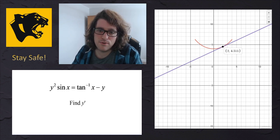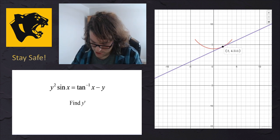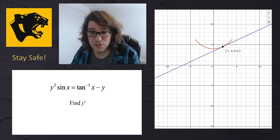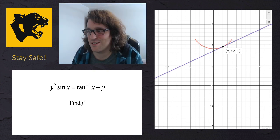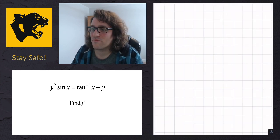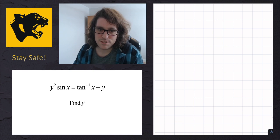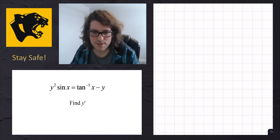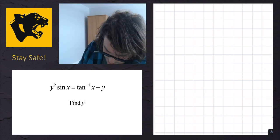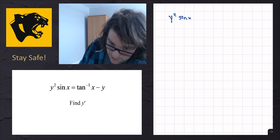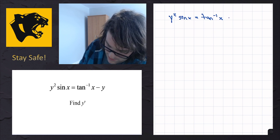Next up, I'm going to do an implicit differentiation question. Interestingly, we originally derived our inverse trig derivatives using implicit differentiation, so this question actually has the result of that process in it. We're going to find y′ for the equation y squared times sine x equals the inverse tan of x minus y.